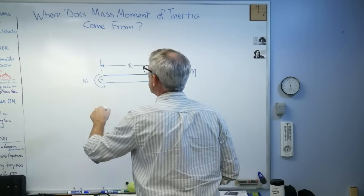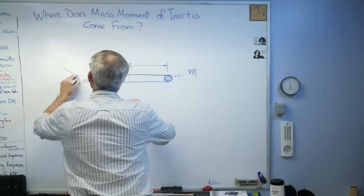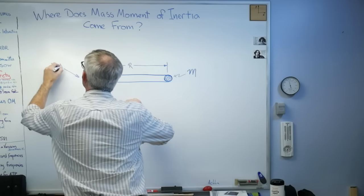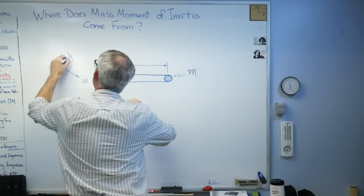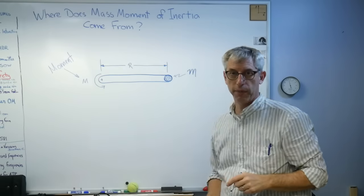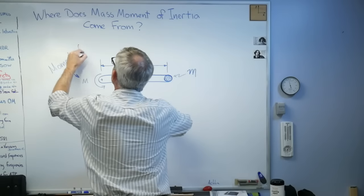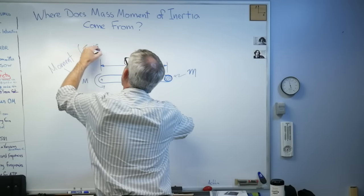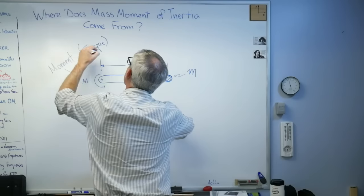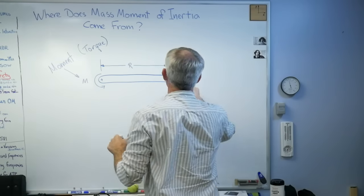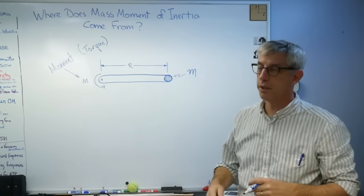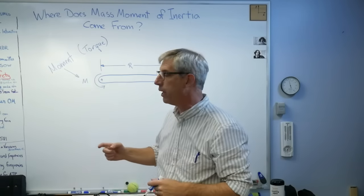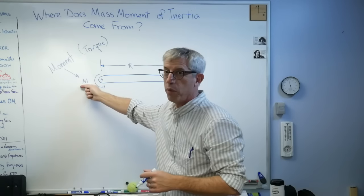This capital M stands for moment. We're going to apply a moment to the end of that bar right there near the pivot. If you want to call this a torque, that's another word that gets used for that. Unfortunately, moment and mass both start with M. Sorry, there's 26 letters in the alphabet, at least the one I use. Capital M will be moment and little m will be mass.